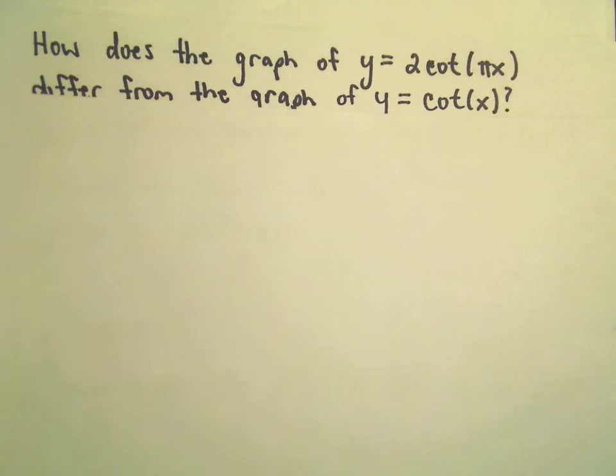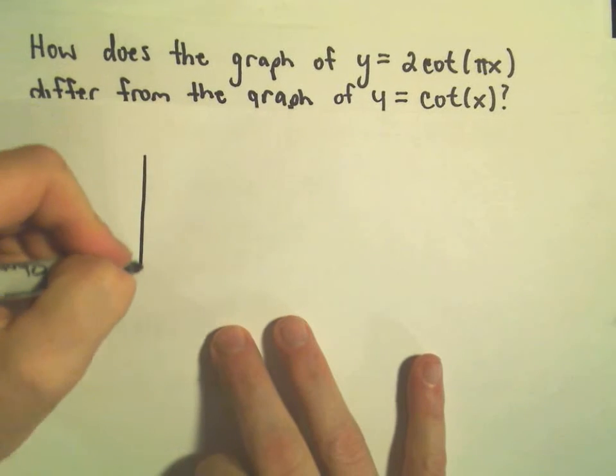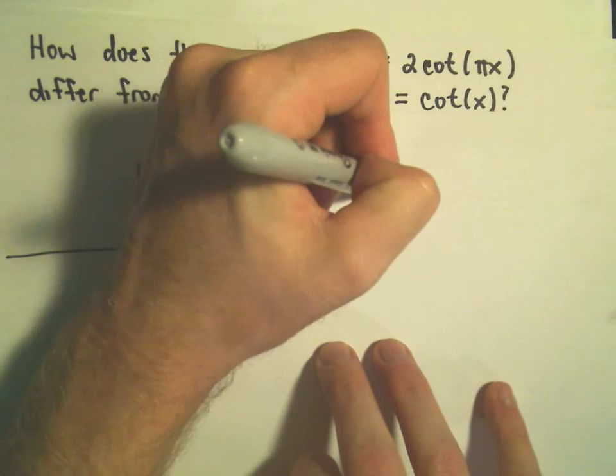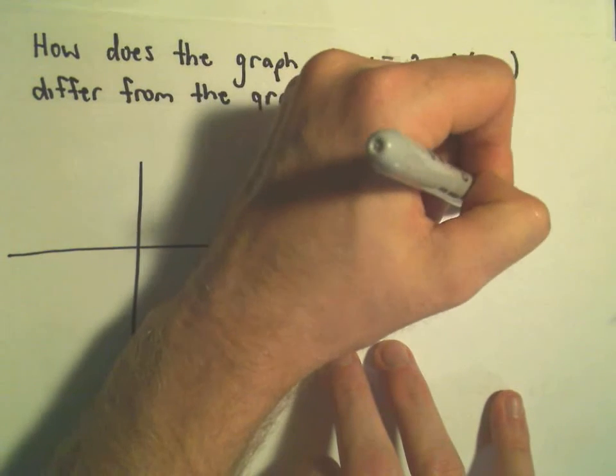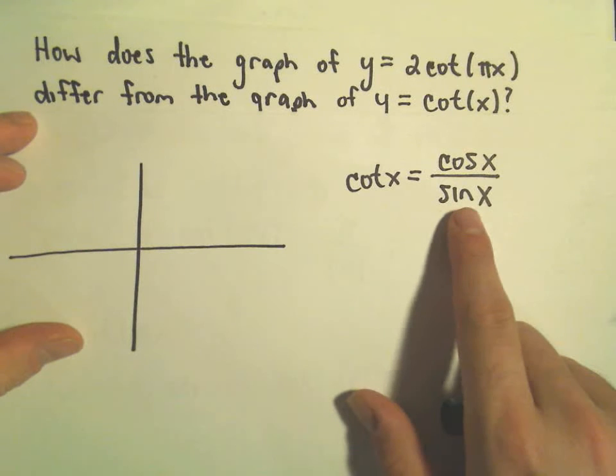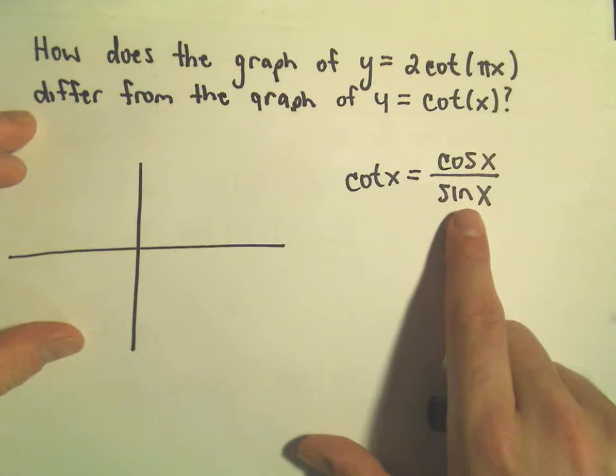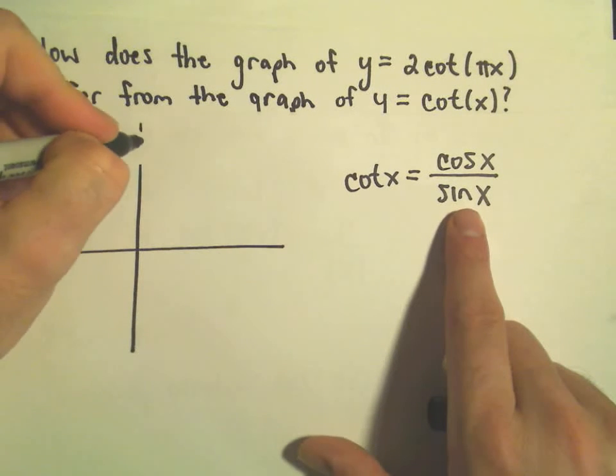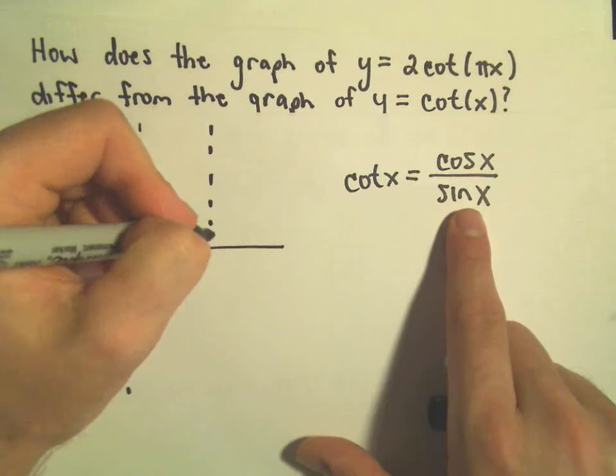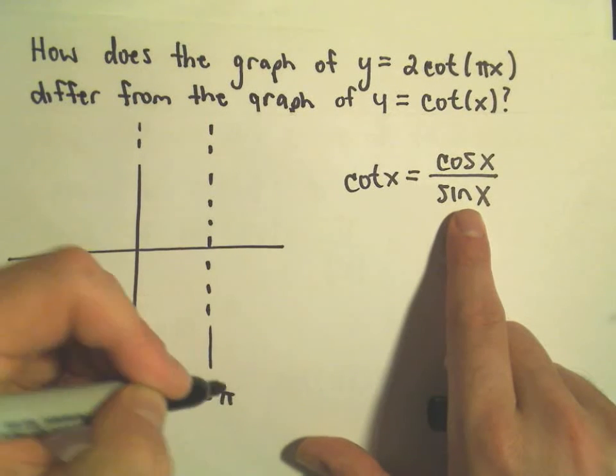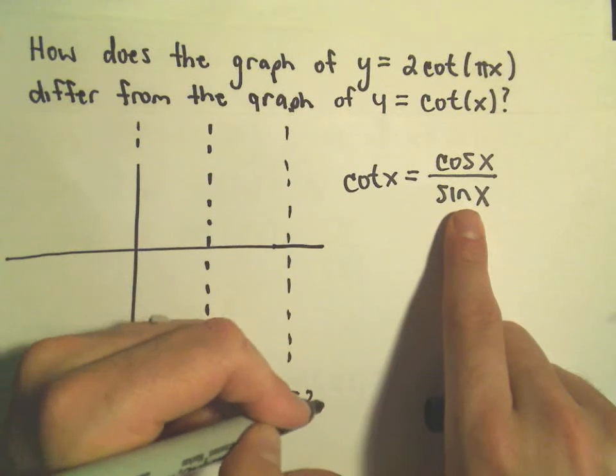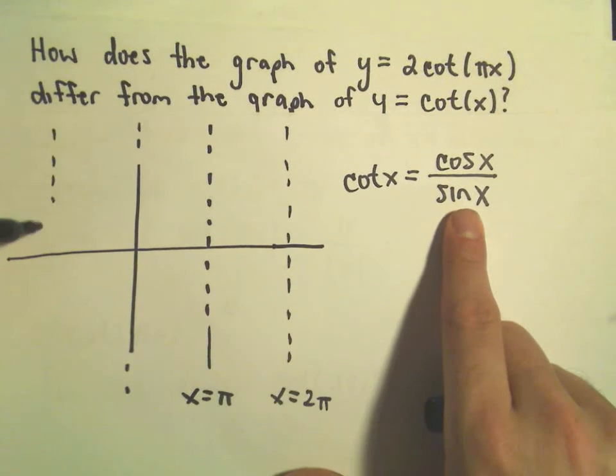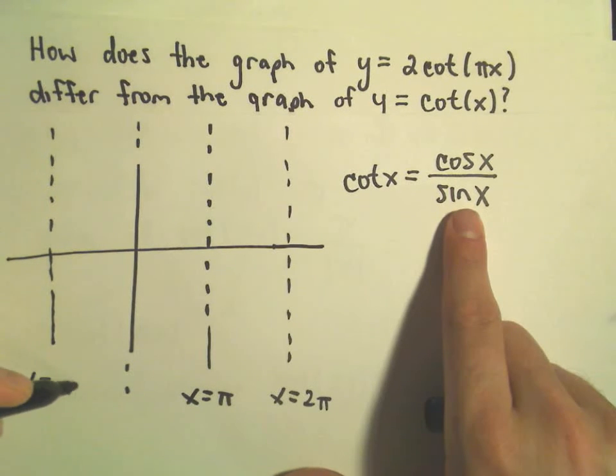I'm going to start off by actually graphing just cot(x) real quick. Remember cotangent is cos(x) over sin(x). Dividing by 0 is undefined. So anywhere the denominator is 0, cotangent is going to be undefined. Well, sin(x) is 0 at 0, really at any multiple of π. So here's x = π, x = 2π. This is a very rough graph here. x = -π, etc.